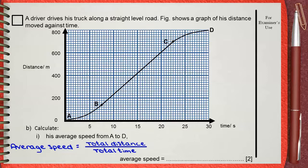In this small journey, you can see that the total distance from the y-axis is 800 meters, while the total time from the x-axis is 30 seconds. By dividing the total distance 800 by the total time 30, this gives an average speed of 26.7 meters per second.